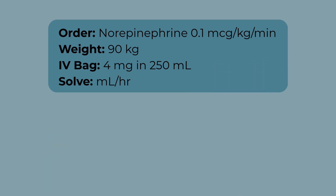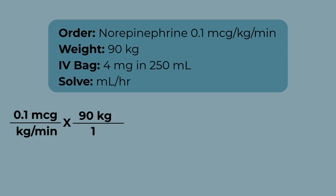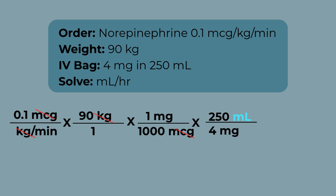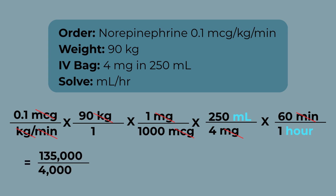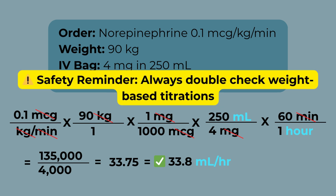Let's walk through it. Start with your order: 0.1 micrograms over kilograms per minute times 90 kilograms. Kilograms cancel out. Next, convert micrograms to milligrams — 1 milligram over 1,000 micrograms. Micrograms cancel out. Bring in the IV concentration: 250 milliliters over 4 milligrams. Cancel the milligrams. Then do your time conversion: 60 minutes over one hour. Minutes cancel. Multiply across the top, multiply across the bottom, and divide. Your answer is 33.75 — round to the nearest tenth and your final answer is 33.8 milliliters per hour.